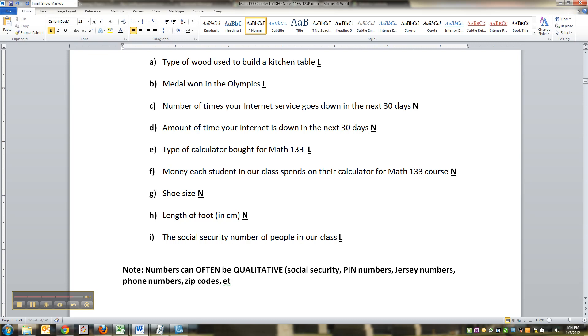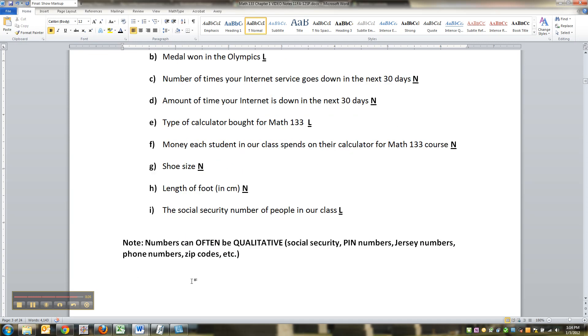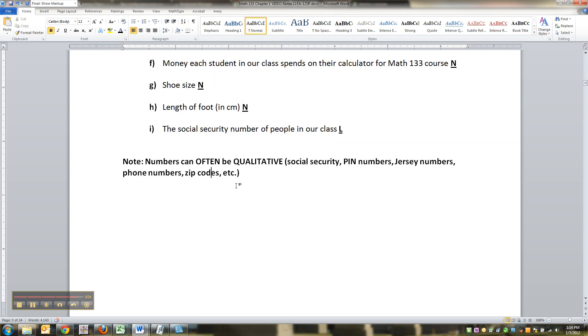How about phone numbers, zip codes, et cetera? There are a lot of numbers in your life that aren't really numbers. Your credit card number - pick something. They're really just labels. You can't take zip codes and add them all up and divide by how many people there are in the class and get anything remotely useful. So it's really qualitative, not quantitative, even though it's numerical.